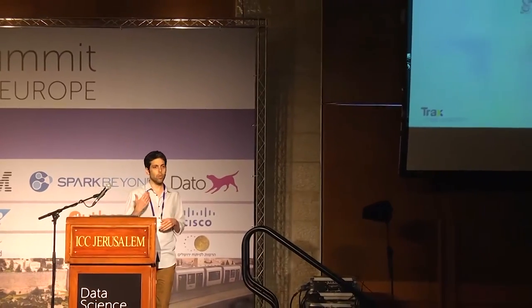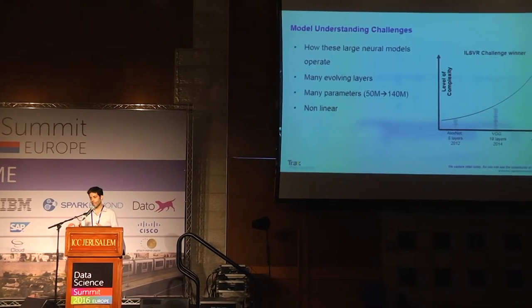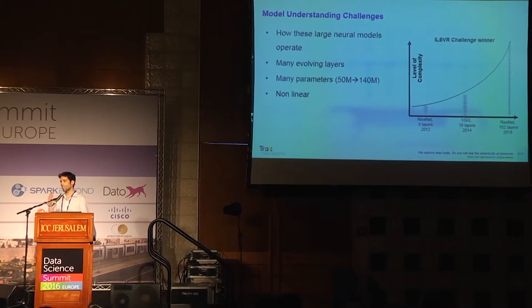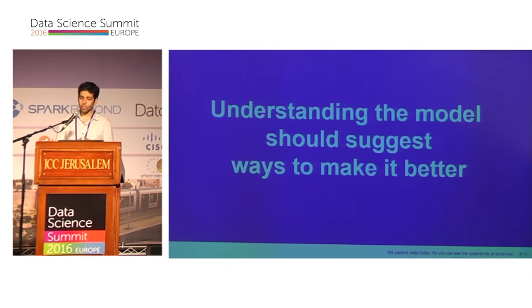Let's say you want to train a deep learning classifier. First you create your dataset, choose your framework, train your network, and evaluate your results. Now there are two options: you're happy and done, or you're not happy. The question is, what can you do? Understanding the model is a challenging task because we're talking about huge neural models with many layers and hundreds of millions of parameters. On top of that, the model is inherently non-linear.